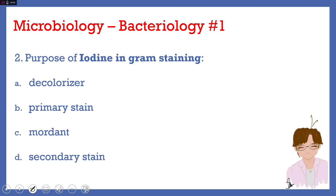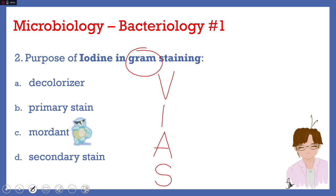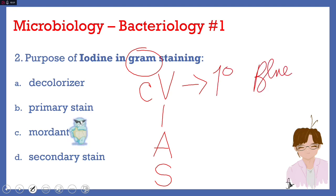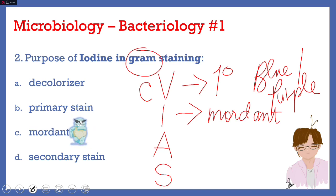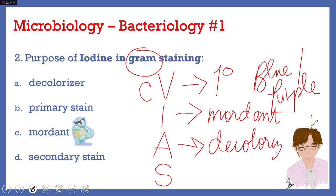Number two: the purpose of iodine in gram staining — A) decolorizer, B) primary stain, C) mordant, or D) secondary stain. The answer is C, mordant. Gram staining may be remembered by the mnemonic BIAS: crystal violet acts as our primary stain and stains bacteria blue or purple. Then comes the second reagent, Gram's iodine, which is our mordant — a substance that enhances the reaction between the cell wall and the primary stain.